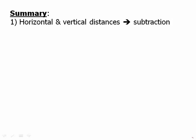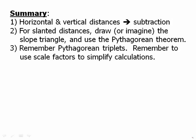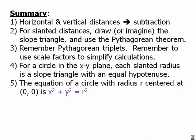So horizontal and vertical distances in the XY plane, we just use subtraction. Very easy. For slanted distances, we draw or imagine the slope triangle and use the Pythagorean theorem. The distance between the two points is the hypotenuse of the slope triangle. Remember Pythagorean triplets. Remember to use scale factors to simplify your calculations, all those things we talked about back in the geometry lessons. For a circle in the XY plane, each slanted radius forms a slope triangle, and all these slope triangles have equal hypotenuses, because the hypotenuse is the radius. The equation of a circle with radius R centered at the origin is X squared plus Y squared equals R squared.